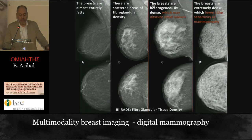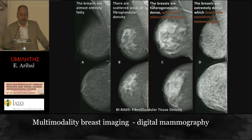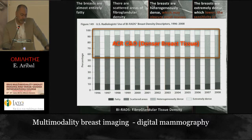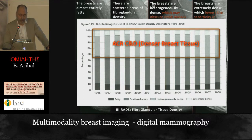For breast tissue, we have four categories depending on the ACR system, from A to D. D is the densest breast — all white as you see on the right-hand side. According to ACR, half of the population has dense breasts like C and D type. In my daily routine it's 60%; in my country it's 42%. Almost half of the mammograms you will see are dense.